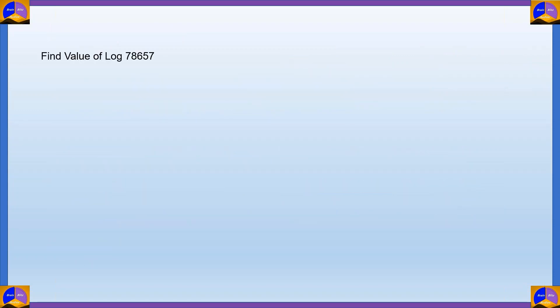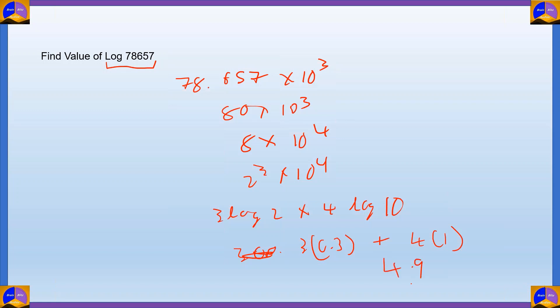So let's test my claim of solving any log problem in 15 seconds. I have the value of log 78657. So count me down to 15 seconds. Here we go. And there you have it. The answer to log 78657 is 4.9. You can check it out using your scientific calculators and you will notice that it will be approximately equal to 4.9.